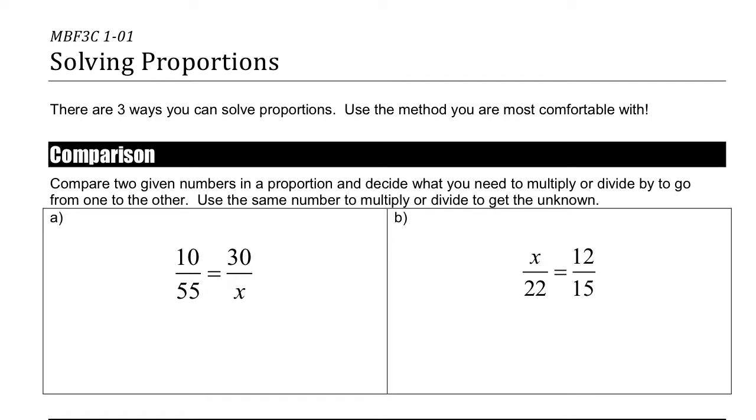So the first method is called comparison. You're going to compare two given numbers in the proportion and decide what you need to multiply or divide by to go from one to the other. Use the same number to multiply or divide to get the unknown.